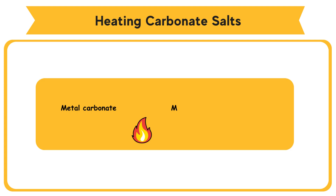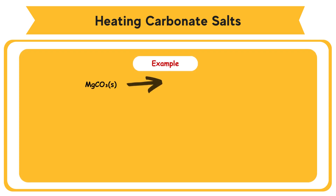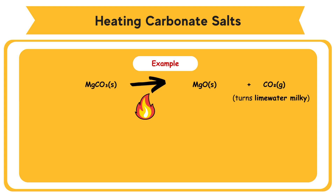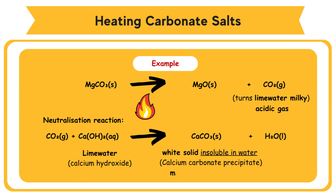Heating carbonate salts: Most metal carbonates decompose on heating to produce metal oxides and carbon dioxide gas. Metal carbonate → metal oxide + carbon dioxide. Example: MgCO3 (solid) → MgO (solid) + CO2 (gas). Magnesium carbonate decomposes on heating to form magnesium oxide and gives out carbon dioxide. The carbon dioxide gas turns lime water milky. Lime water is calcium hydroxide solution. Carbon dioxide is an acidic gas. A neutralization reaction occurs between lime water and carbon dioxide: CO2 (gas) + Ca(OH)2 (aqueous) → CaCO3 (solid) + H2O (liquid). Calcium carbonate is a white solid insoluble in water, and its precipitate makes the lime water cloudy.